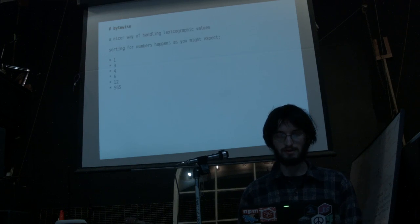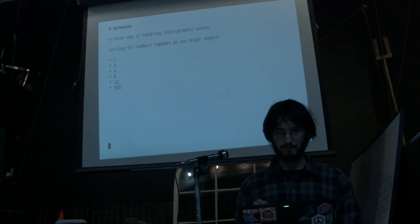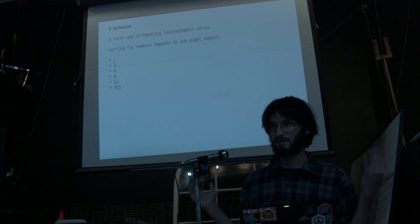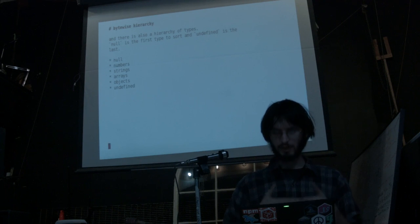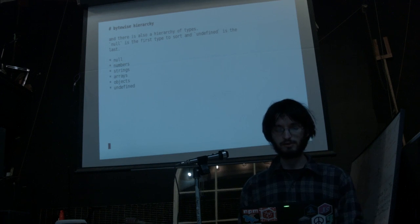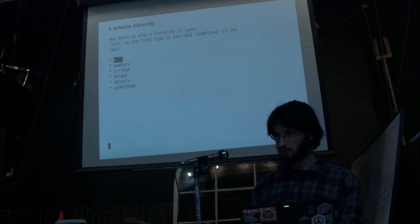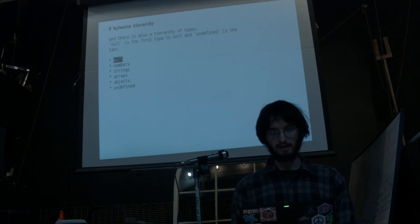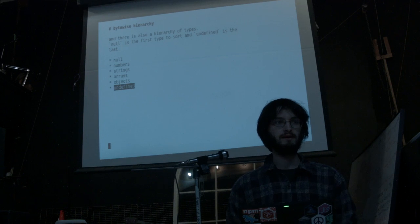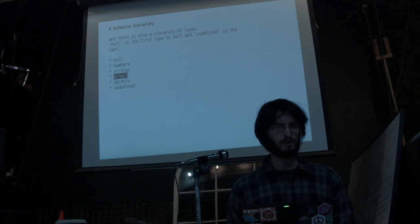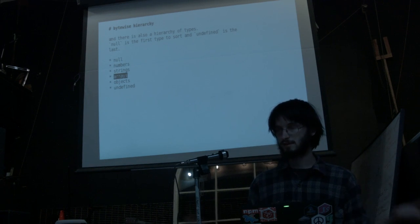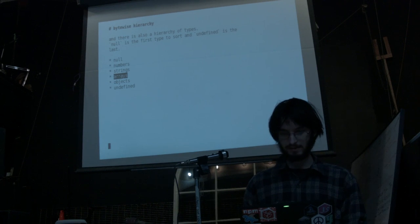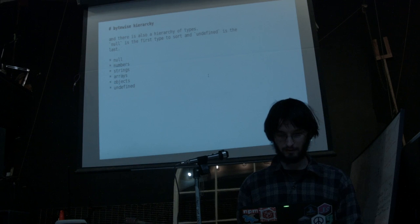One way to get around this is to use a package called ByteWise. ByteWise will make numbers work like you think they should. It also has nice other properties: it will sort numbers before strings, then arrays after that. One nice property is that the value null in JavaScript will always come first, and the value undefined will always come last. Arrays will be sorted component-wise — each item in the array will be sorted individually based on its type.